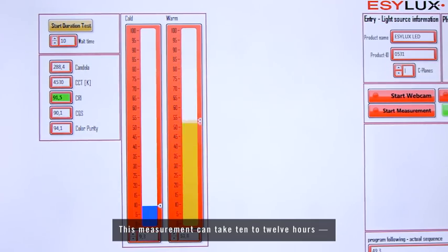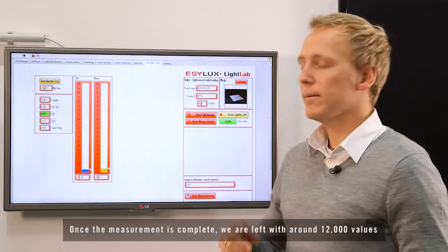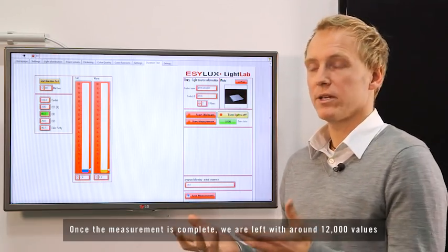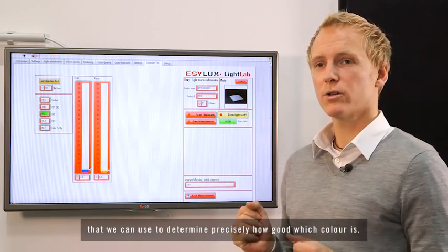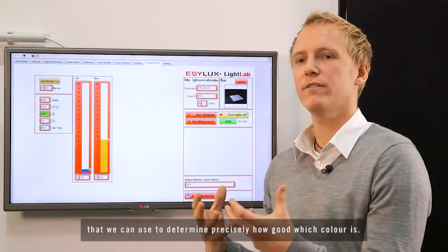Bis diese Messung zu Ende ist, dauert das dann glatt mal 10 bis 12 Stunden, also eine wirkliche Langzeitmessung. Wir sehen aber nach diesen 12 Stunden haben wir 12.000 Werte ungefähr und können aus diesen 12.000 Werten ganz genau rauszählen, wie ist welche Farbe, wie gut.